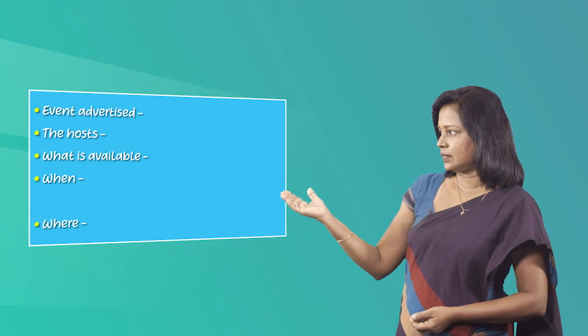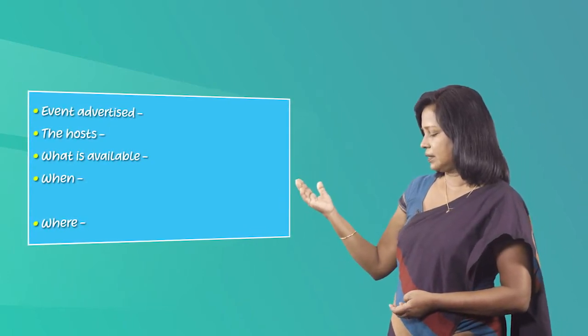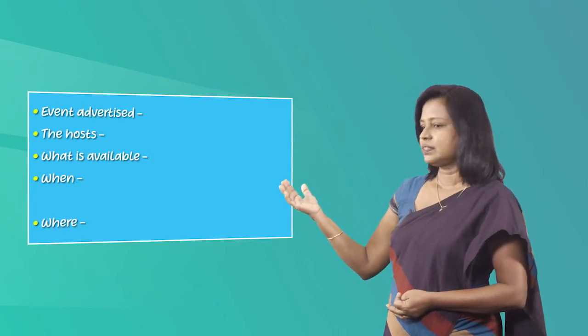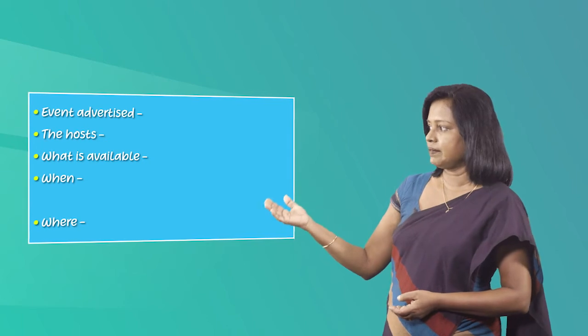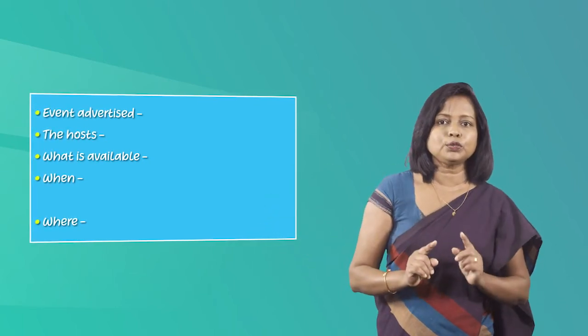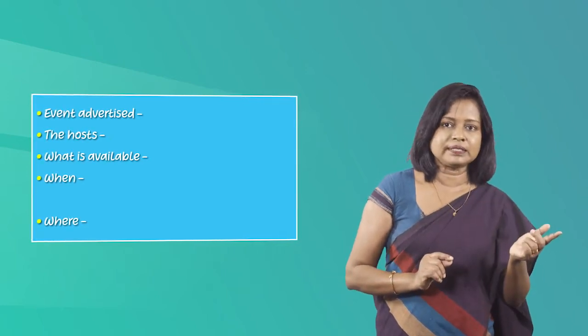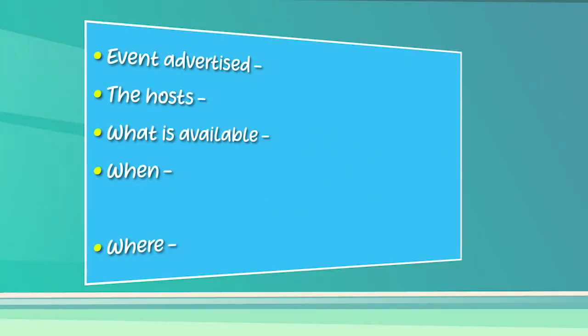Now look at the information sheet. First you need to find the event advertised, and then the host. Then what is available, and when this event is held and where. So now I want you to pause the video, go back to the advertisement, read it and fill in the information. Let's check your answers now.